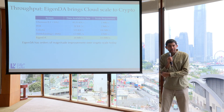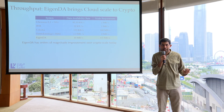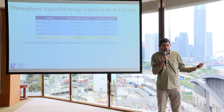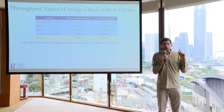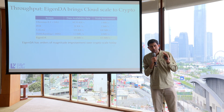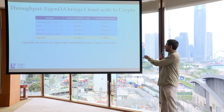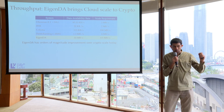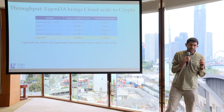One way to get high bandwidth is to say every node participating in consensus needs to be a beefy super node — that's the Solana approach. We're not taking that. We're taking the Ethereum approach: simple lightweight nodes, where each node only needs 0.5 megabytes per second, but together they can actually serve high data throughput.